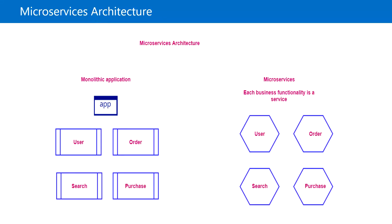Hello everyone, welcome back. In this video we are going to see microservices architecture. In the past we have been using the monolithic application model, where all the modules in the application are in a single code base. Let's say if this is an e-commerce application, it has multiple modules and there will be different developers working on each of these modules, but at the end all these modules will be in a single code base accessible by customers.